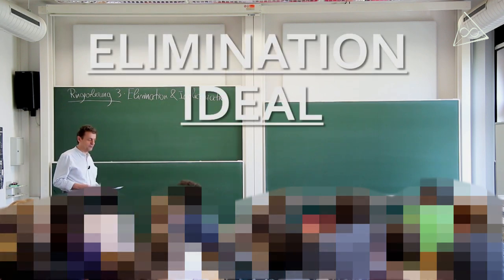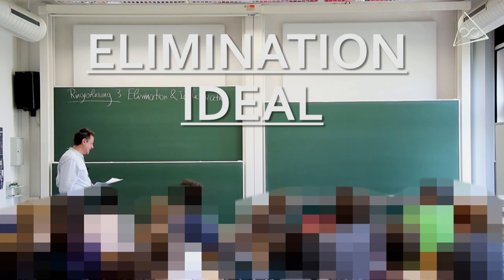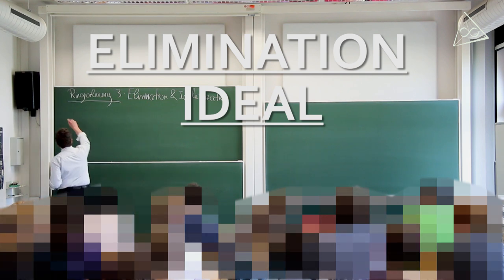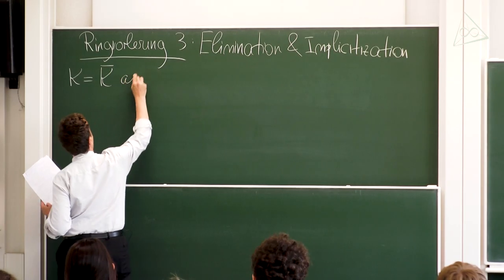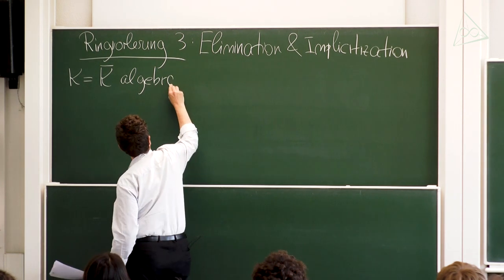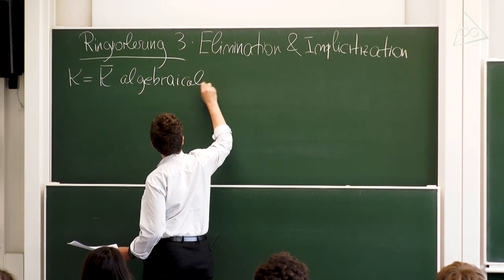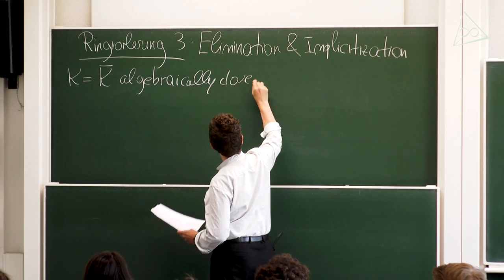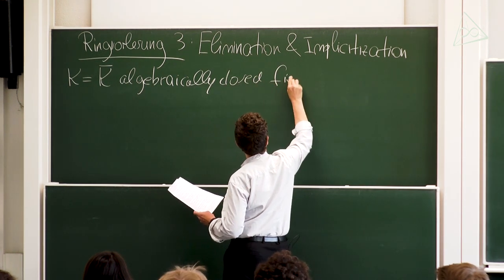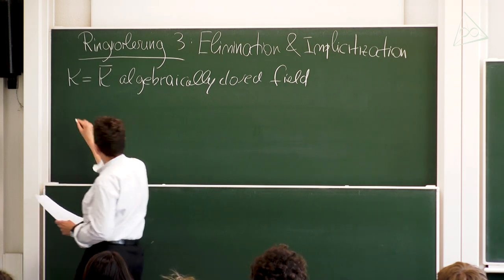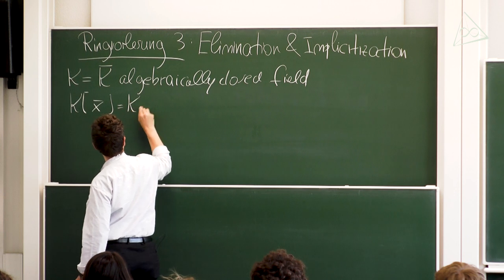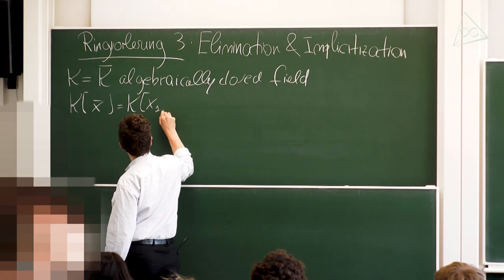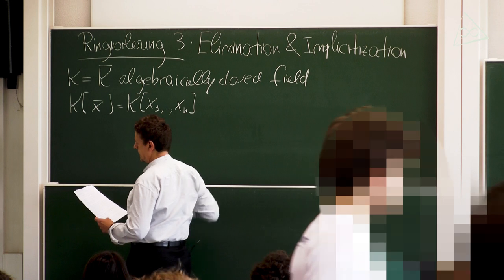Welcome to ring-fold liaison number three. The topic today is elimination and implicitization. The setting is that k is a field, which I will take algebraically closed, such as the complex numbers. I'm going to write k[x̄] for the polynomial ring in n variables, x₁ up to xₙ.